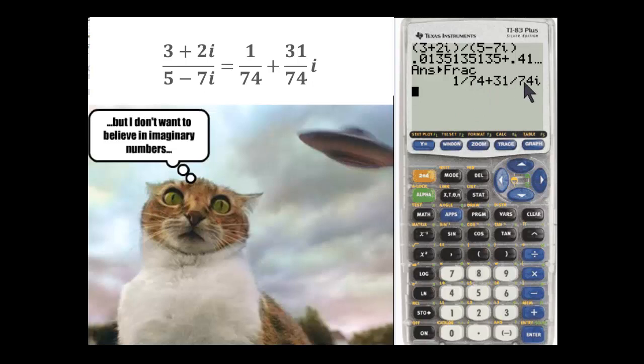The only danger here is thinking that you'll have the fraction 31 over 74i, which is not what you have. You have the fraction 31 over 74.